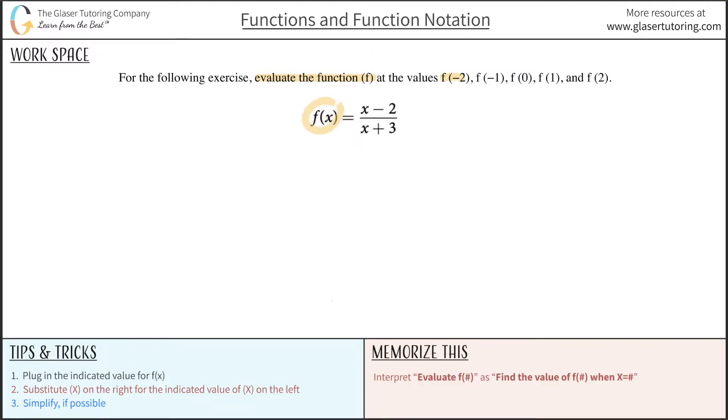Find this value when x is one of these values: negative 2, negative 1, 0, 1, and 2. All we have to do is follow the steps indicated on the bottom left and we can easily solve this. Just remember the main idea of what we're trying to do.